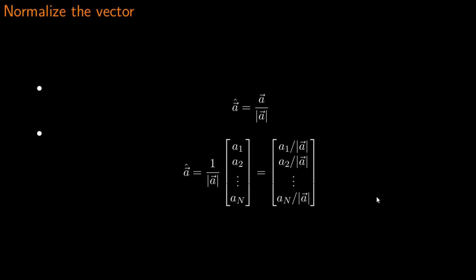The normalised version of vector A is the vector A divided by the norm of vector A — essentially 1 over the magnitude multiplied by vector A, where each element is divided by the magnitude. So we have A1 divided by the magnitude of A, A2 divided by the magnitude of A, and so on. The normalised version of the vector means a vector that has a length of 1. Whatever direction it was originally pointing in, after normalisation it will still point in that direction but will now have a magnitude of exactly 1.